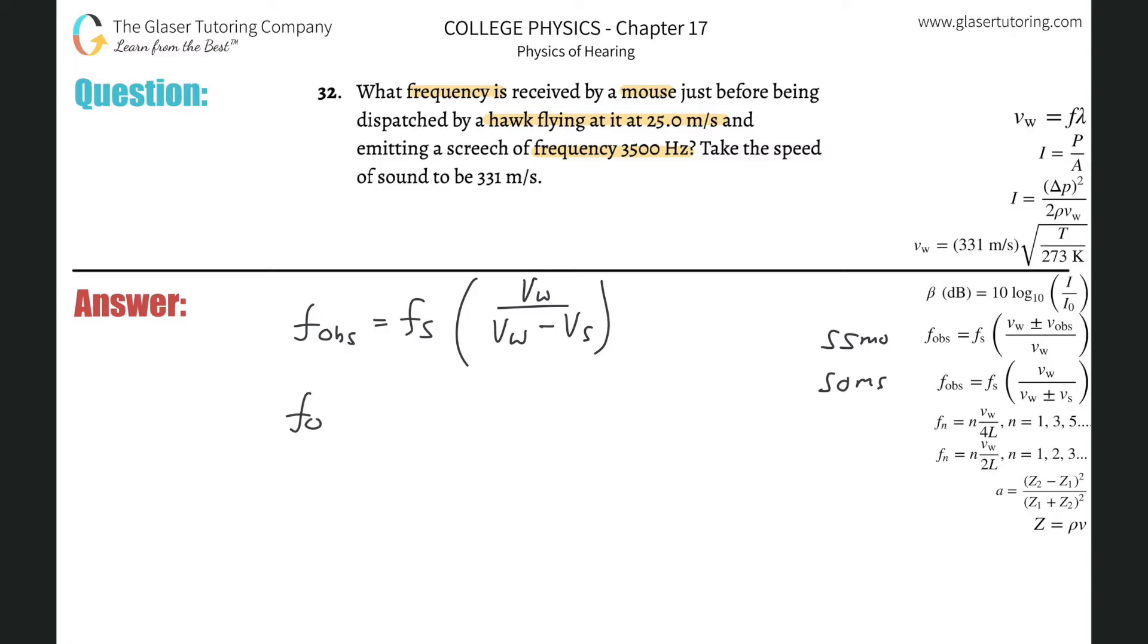Now all we need to do is really just plug in. The frequency of the observer is going to be equal to the frequency of the source, 3500 hertz, the velocity of sound they told us to take to be 331, divided by the velocity of the sound, 331 minus the velocity of the hawk. Thank goodness they gave it to us in meters per second. So this is 3500 multiplied by 331 divided by parentheses 331 minus 25 close those parentheses.